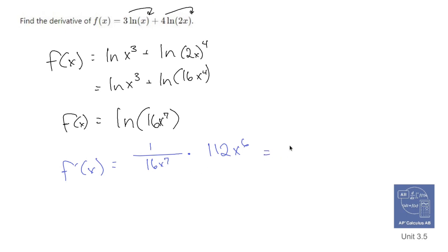Now simplifying this a little bit, 112x to the sixth over 16x to the seventh, I already know that that's going to be seven. And that's going to be over x because of the way that these simplify.